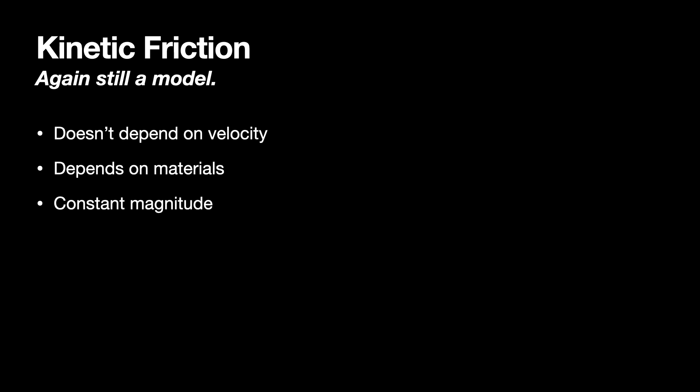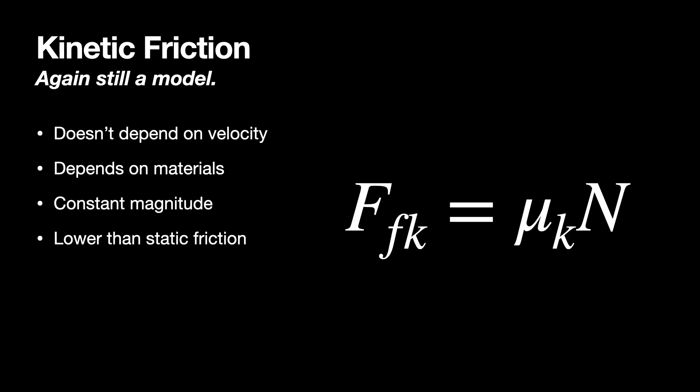We also have kinetic friction — still a model — for when an object is sliding. It doesn't depend on velocity. It depends on the types of materials. It has a constant magnitude force, generally lower than static friction between the two surfaces. The equation uses an equal sign with a different coefficient, but it's still a force of constraint because you don't know the normal force.